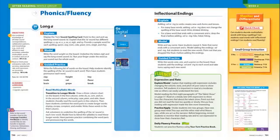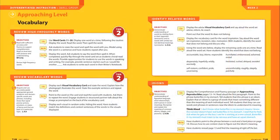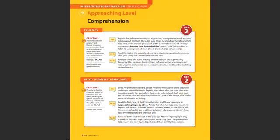The continuous instruction and practice of reading foundational skills is critical for students at grades K through 6. The Reading Wonders instructional model provides differentiated instruction for foundational skills, including phonics, vocabulary, and fluency.